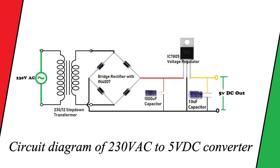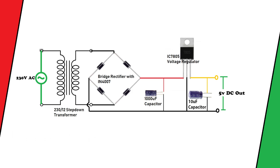So this is our desired circuit. What we have used here is a transformer, a 230 volt to 12 volt step down, four diodes in form of a bridge rectifier, two capacitors of 1000 microfarad and 10 microfarad respectively, and a 7805 voltage regulator.